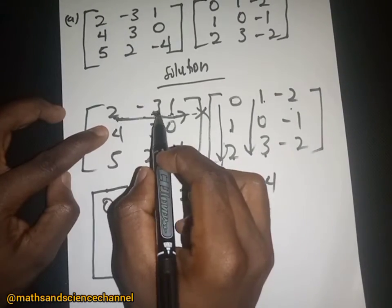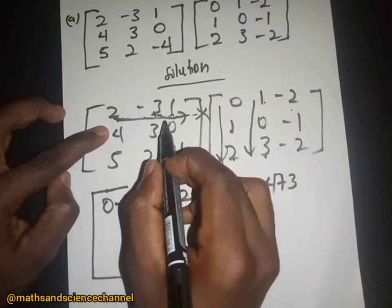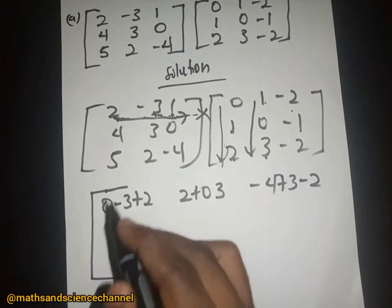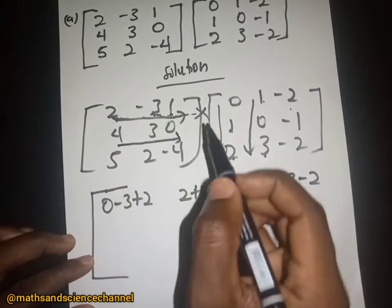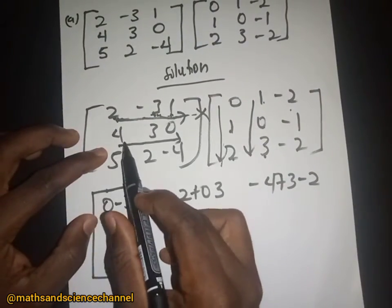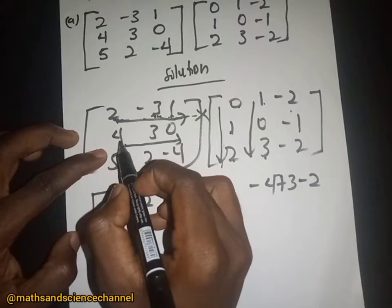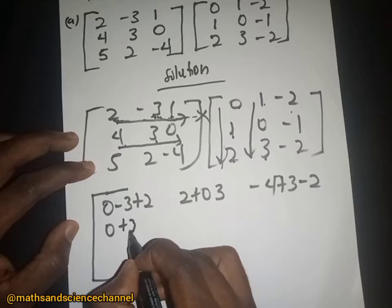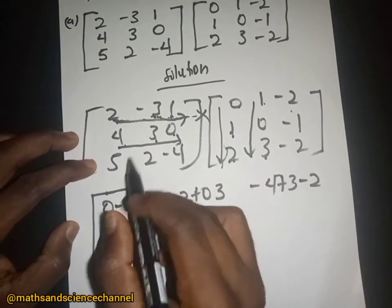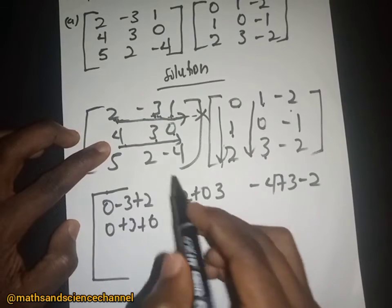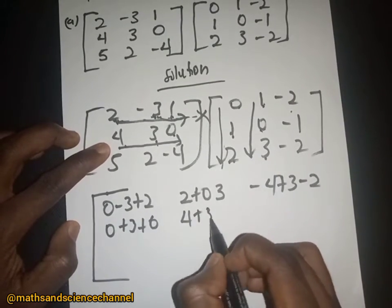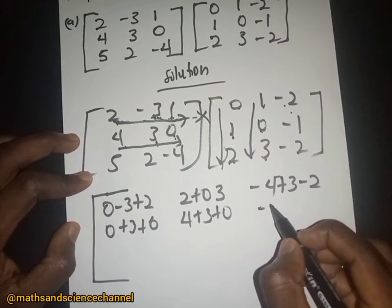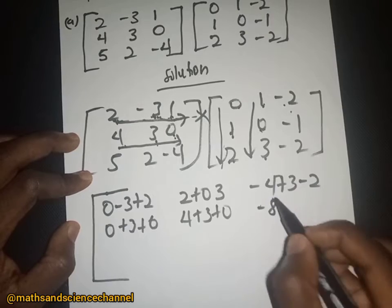Then negative 3 multiplied by positive 3 and 1 multiplied by that gives us those entries. In the next row: 4 multiplied by 0 is 0; 3 multiplied by 1 is 3; and 0 multiplied by 2 is 0. Then 4 multiplied by 1 is 4; 3 multiplied by 0 is 0; 0 multiplied by 3 is 0.